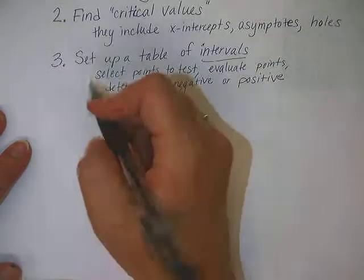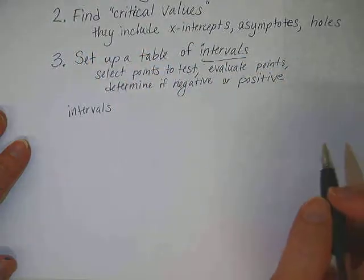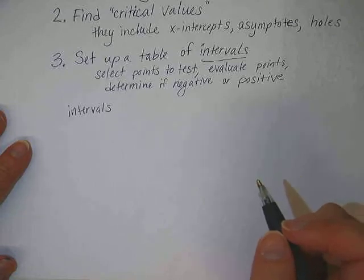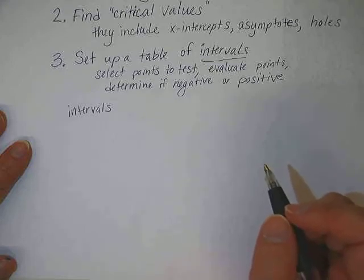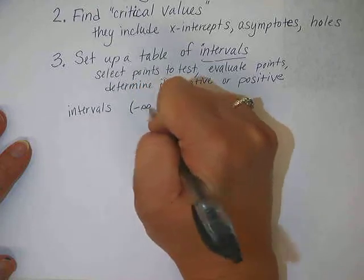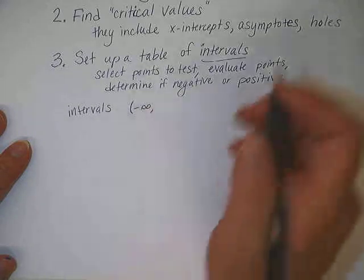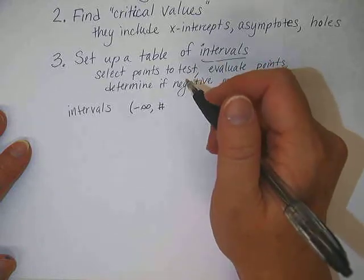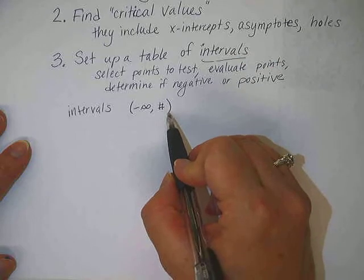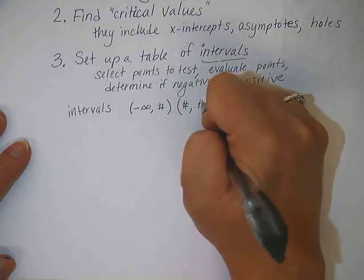Let's look at how to create this table. Your table includes the intervals you are dealing with — you can have anywhere from two up to however many there are, usually at least three. Your intervals always start at the left side of your number line: the first interval starts at negative infinity to some number, and whether it's a parenthesis or a bracket depends on whether the inequality is strict or includes equality.